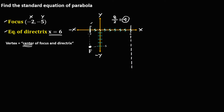Starting from the focus point and counting on the next point: 1, 2, 3, 4. This is now the center of the focus and the directrix. Since the vertex always aligns with the focus, this center point is the vertex.